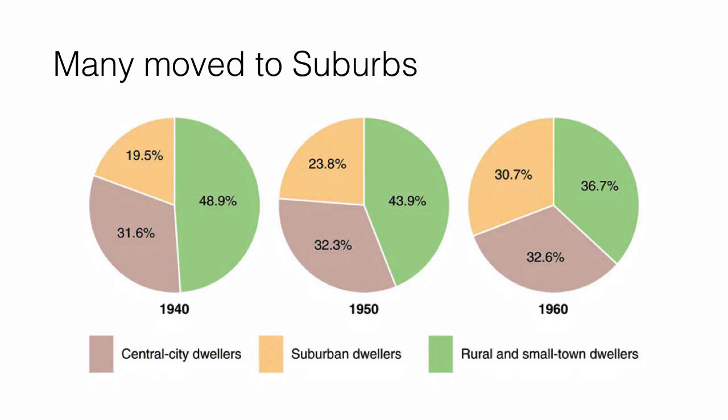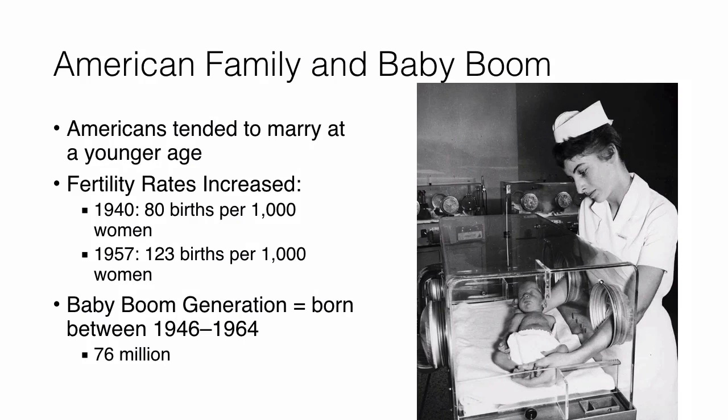The American family is also growing in size and Americans were marrying at younger ages. By 1940, fertility rates were up. There were about 80 births per thousand women, but by 1957, with the baby boom, we get 123 births for every thousand women — a lot of babies. This generation is known as the baby boom generation, born between 1946 and 1964, totaling about 76 million people.